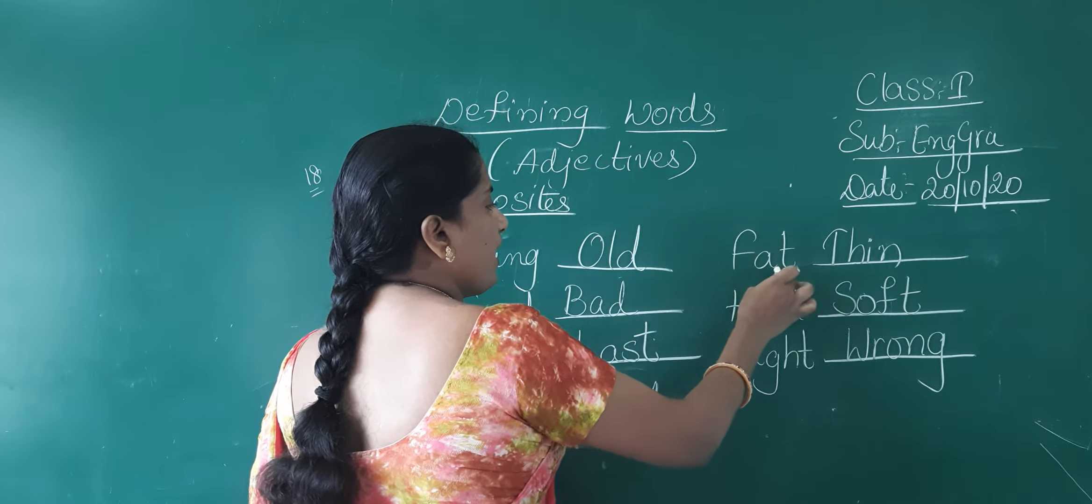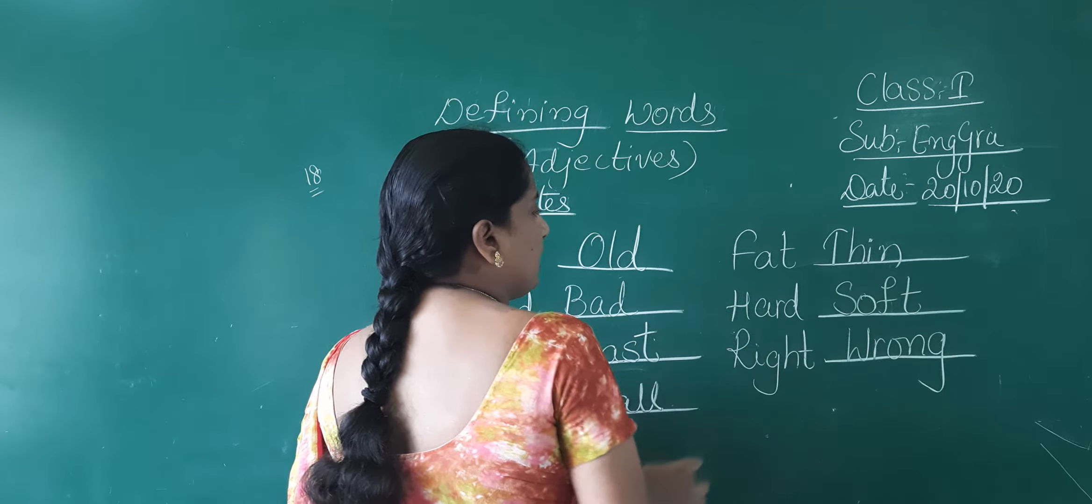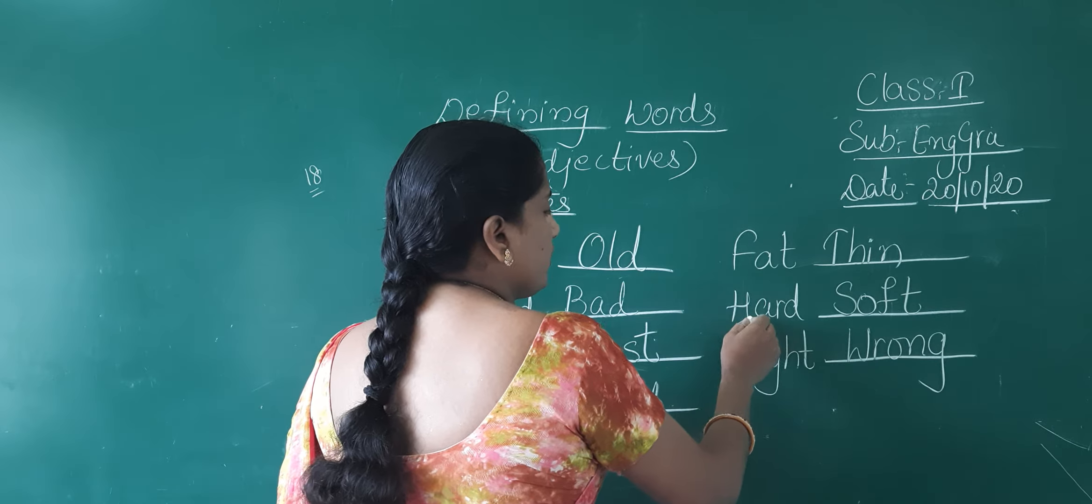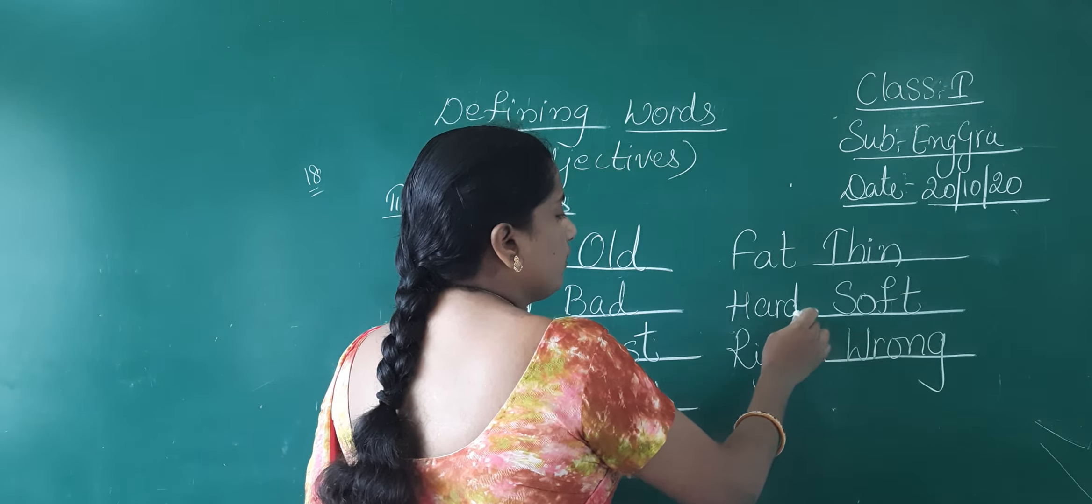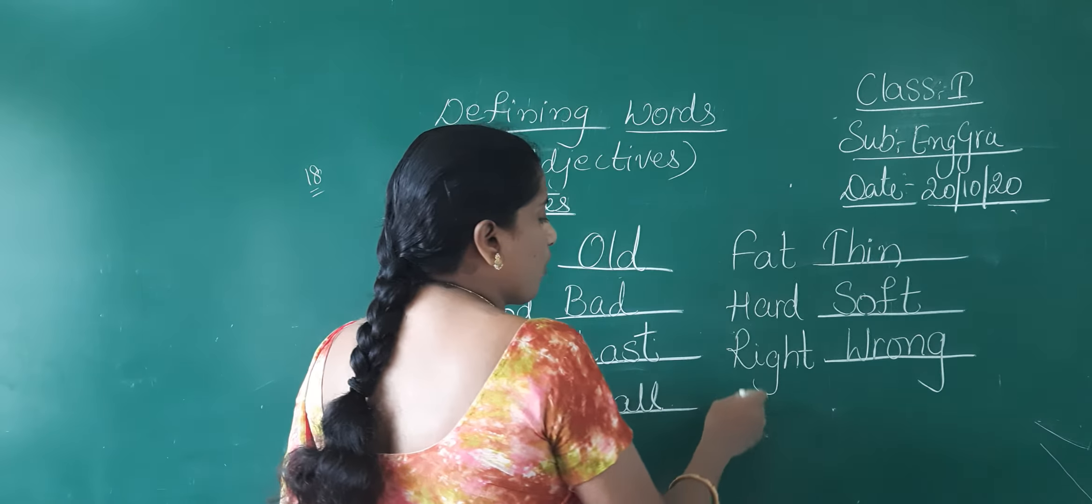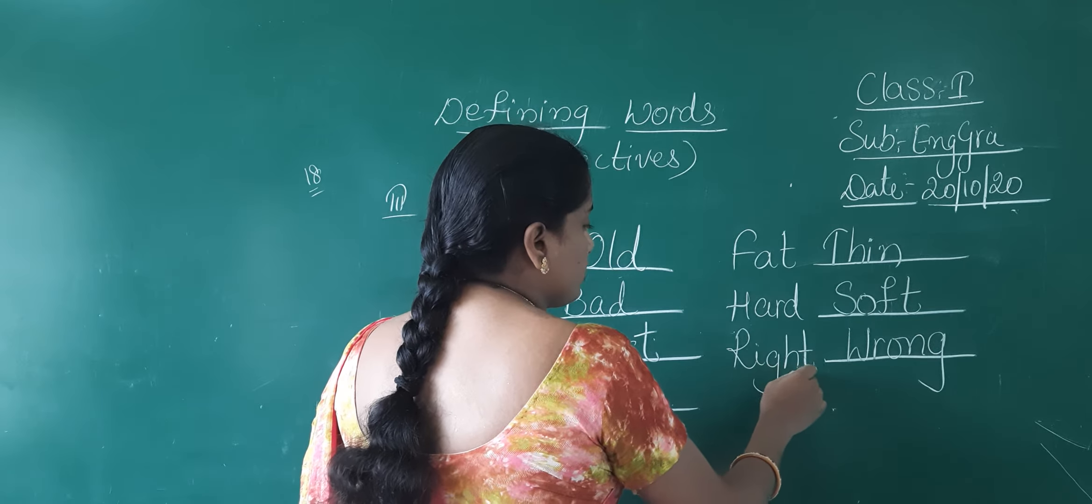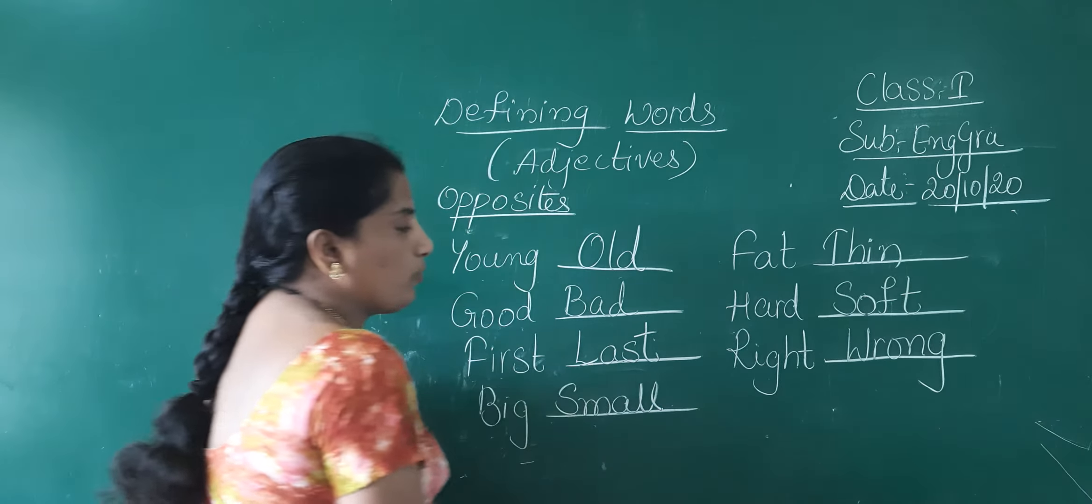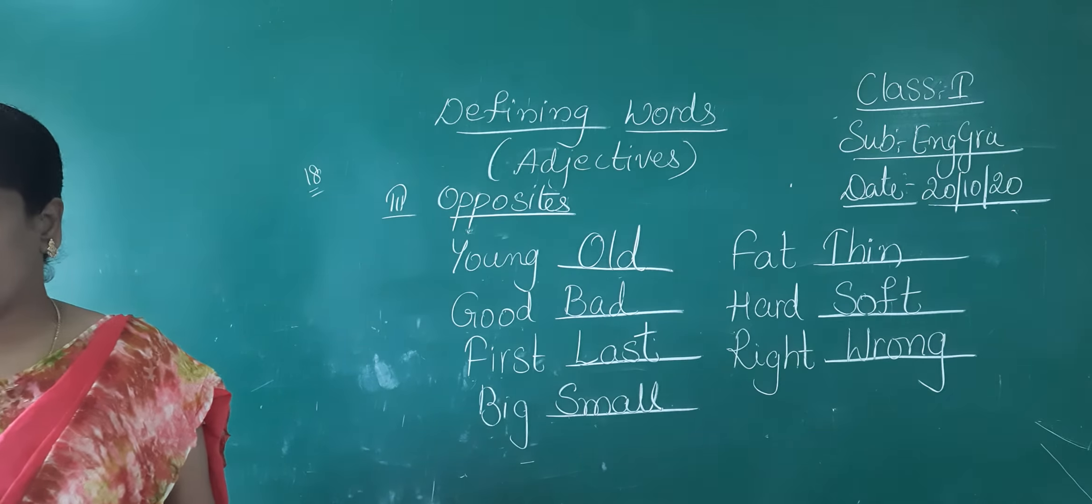Fat, F-A-T, fat. Fat opposite, thin, T-H-I-N, thin. Hard, H-A-R-D, hard. Hard opposite, soft, S-O-F-T, soft. R-I-G-H-T, right. Right opposite, wrong, W-R-O-N-G, wrong.